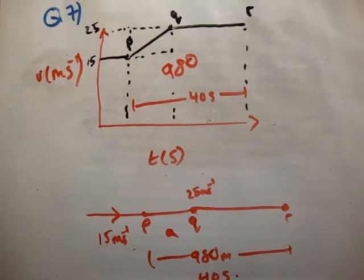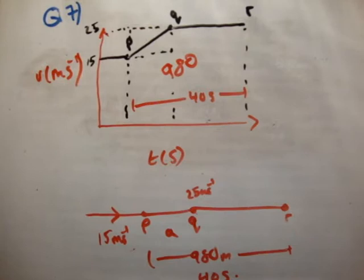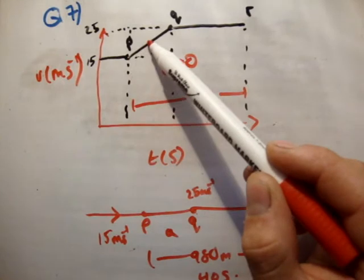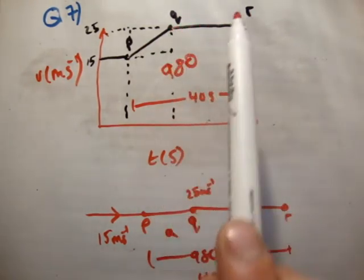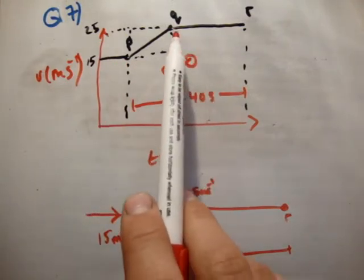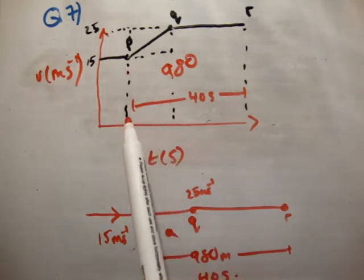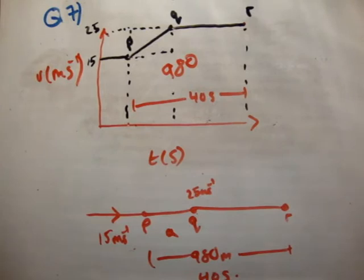So to graph this, we say that it drives and hits position p, and it's moving at 15 meters per second here. It accelerates, therefore we draw a line going upwards, and then it continues at that point at a constant velocity towards r. Now what I've done is I've just created all the little shapes as normal. We're told that the total distance, the area underneath that curve, is 980 meters, and we're told that the time elapsed is 40 seconds.